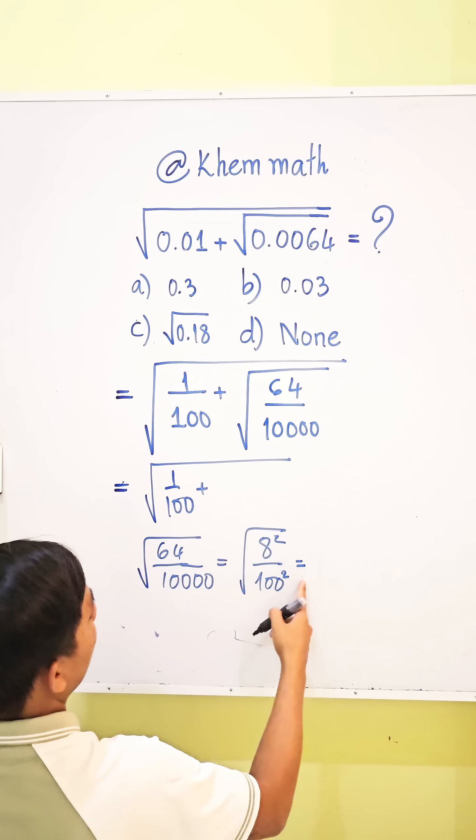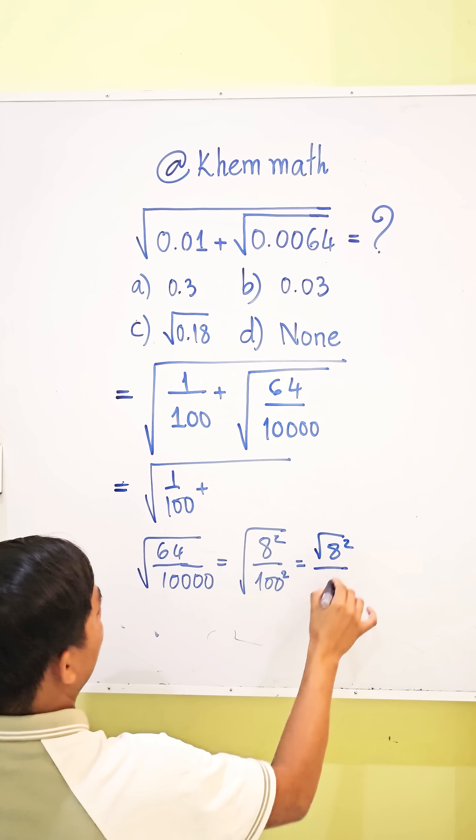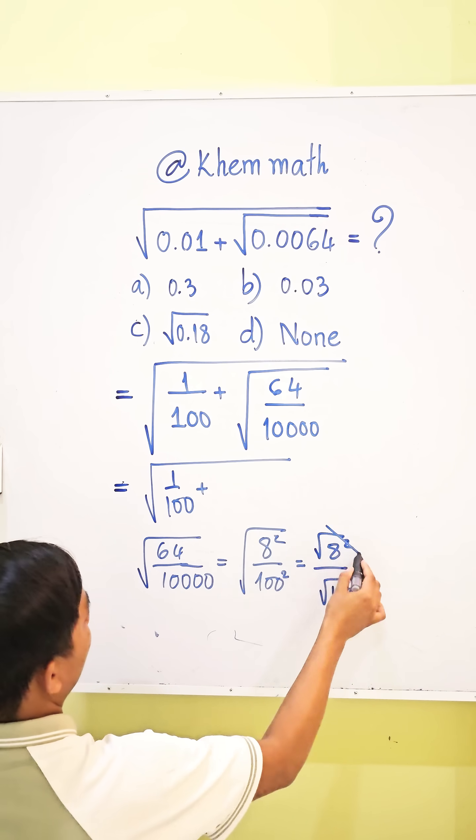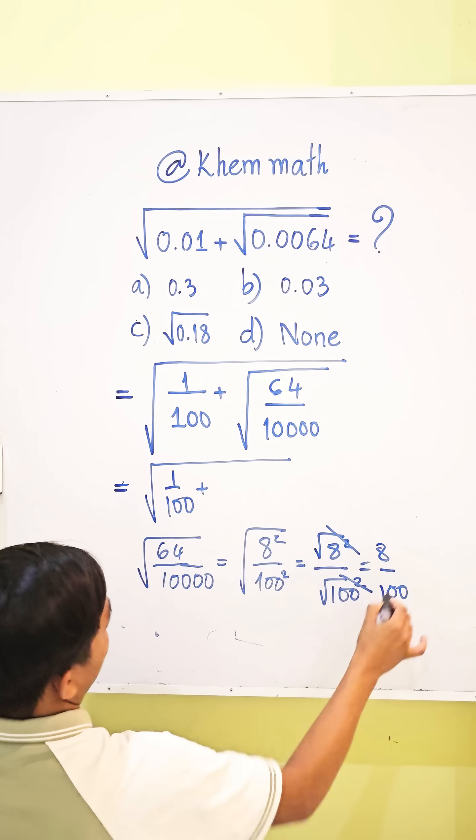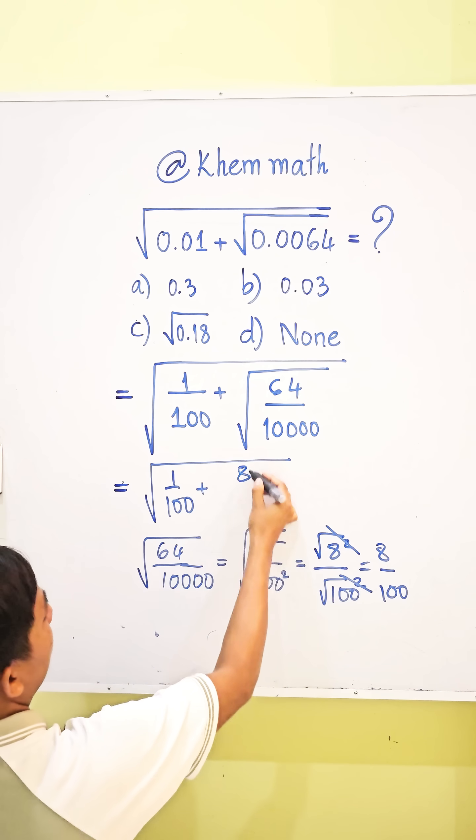And this equals square root of 8 squared divided by square root of 100 squared. So we simplify this and get 8 divided by 100.